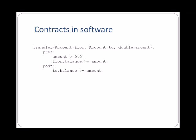After the transfer has occurred, the to-account must contain at least the amount of money transferred. These statements might seem obvious, but as anyone who has programmed a computer knows, what the programmer meant is not always what the code does, especially in a complex system. Making the contracts explicit not only adds documentation to the system, but allows the contracts to be checked at runtime to ensure that the program is doing what the author intended.